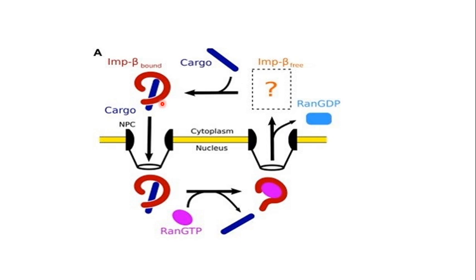Importin beta will utilize its HEAT repeats to interact with the FG sequences of the nuclear pore complex. The complex of importin beta and the cargo protein will be transported into the nucleus. Just as we discussed previously, inside the nucleus importin beta interacts with Ran-GTP, and when it does so it loses its affinity for the cargo protein. The cargo protein is therefore released into the nucleus, and you now have a complex of importin beta and Ran-GTP.